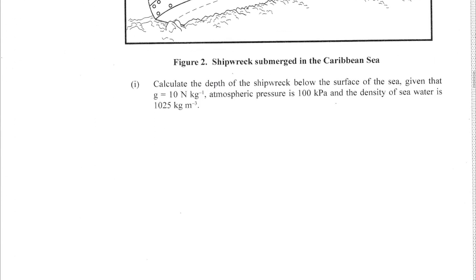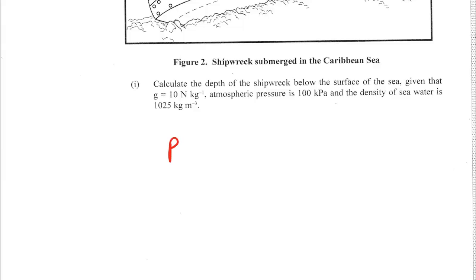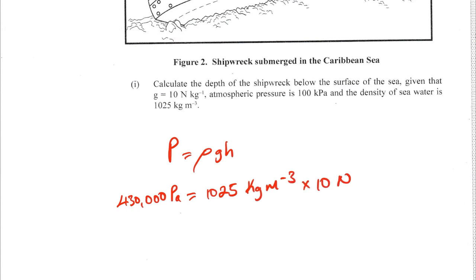Question B1: calculate the depth of the shipwreck below the surface of the sea, given gravity = 10 N/kg, atmospheric pressure = 100 kPa, and density of seawater = 1025 kg/m³. Using the formula P = ρgh, we rearrange to get h = P/(ρg). Substituting the values, we get 41.95 meters. This formula relates the pressure at a given depth to the density of the fluid, the acceleration due to gravity, and the depth.